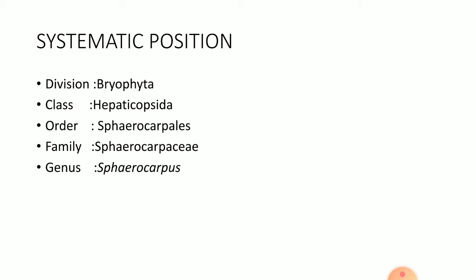In thalloid forms, the plant body is prostrate and it can be lobed and dichotomously branched. The ventral surface of the thallus bears many unicellular, unbranched, smooth-walled, and tuberculate rhizoids and scales. The function of the rhizoids is the same as that of the roots of higher plants: to absorb water and minerals and to fix the plant to the substratum. The photosynthetic cells contain many chloroplasts, therefore the plant is autotrophic in nature.